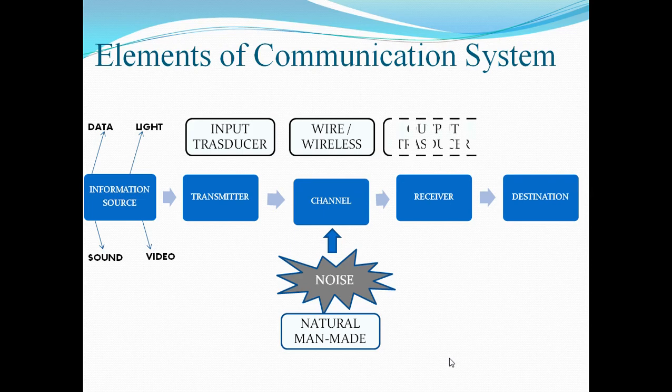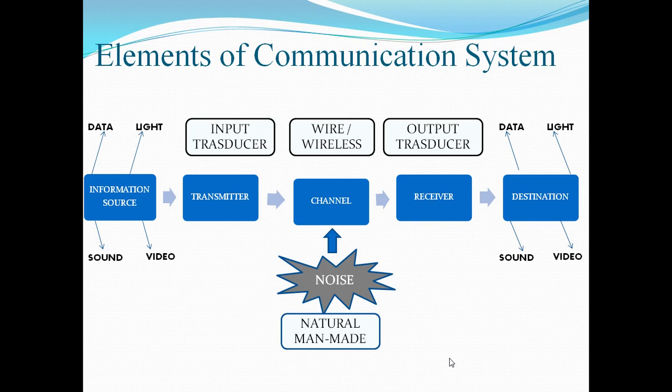The next is the receiver. At the receiver, same as the input transducer, there is an output transducer which converts your electrical signal back to the original signal. And this signal is sent to the destination. So at the destination side, we will get our source in the form of light, data, sound, or video back.